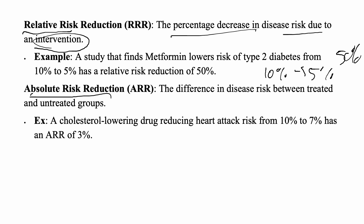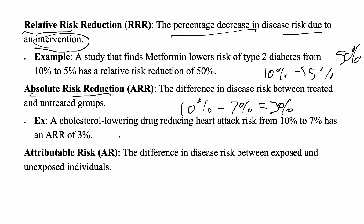Contrast that with absolute risk reduction, which is the difference in disease risk between treated and untreated groups. For example, a cholesterol-lowering medication that reduces heart attack risk from 10% to 7% would have an absolute risk reduction of 3% — that's simply the difference between the two values.